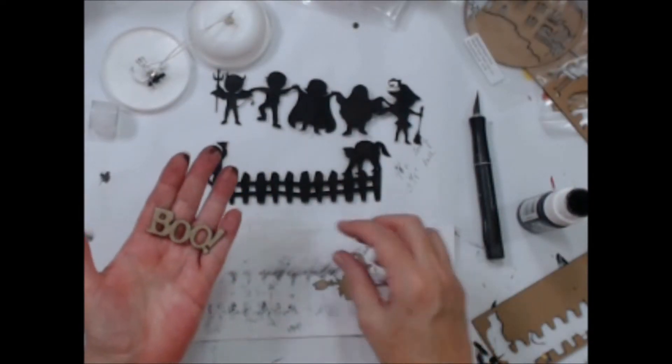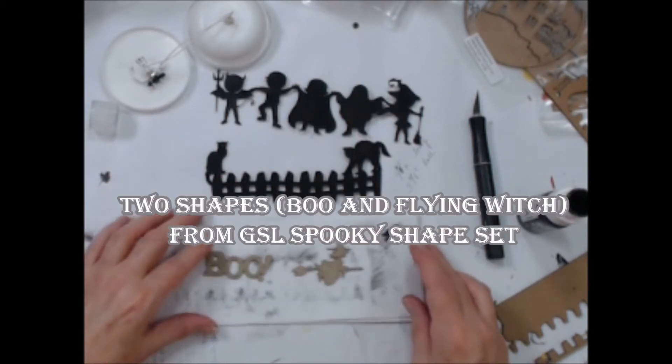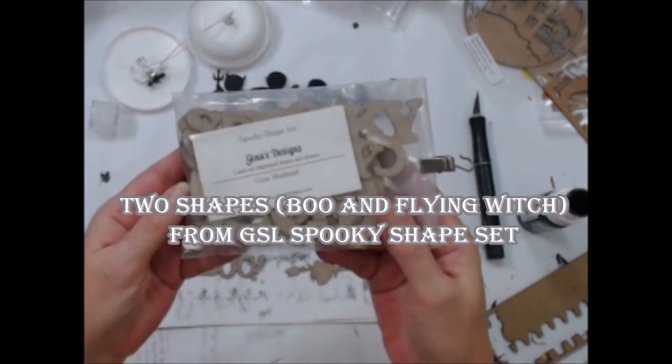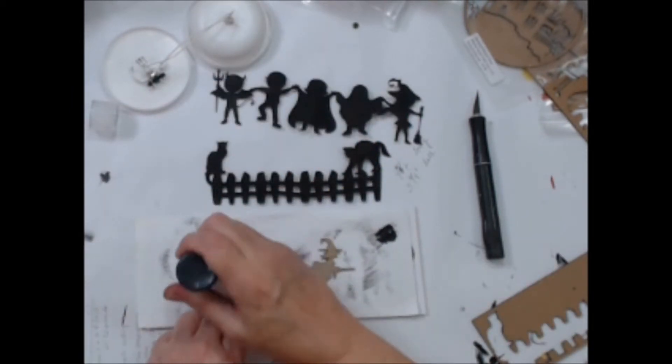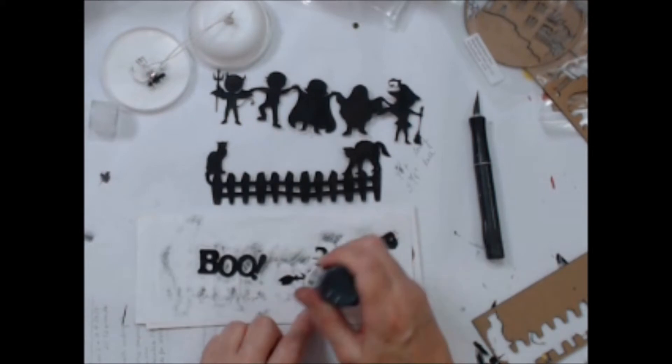I've chosen two small shapes, Boo and a Flying Witch from the Gypsy Soul Spooky Shape Set, which as you can see contains a lot of shapes. While I'm at it, I'll go ahead and paint these and set them aside to dry.